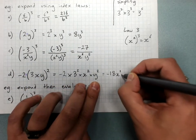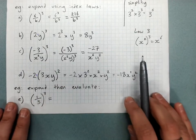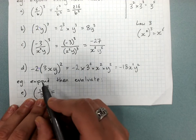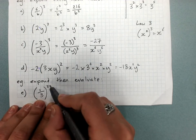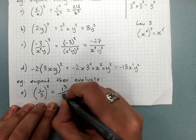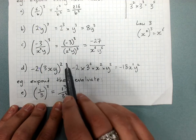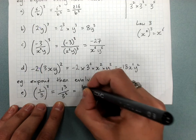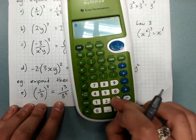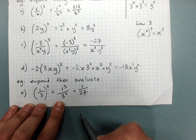The last question says expand then evaluate. A fraction to a power means the top cubed over the bottom cubed, so (1/3) cubed is 1 cubed over 3 cubed. Evaluating: 1 cubed is 1 times 1 times 1 which is 1, and 3 cubed is 27. Since the question says evaluate, we want a number answer: the fraction answer is 1 over 27.